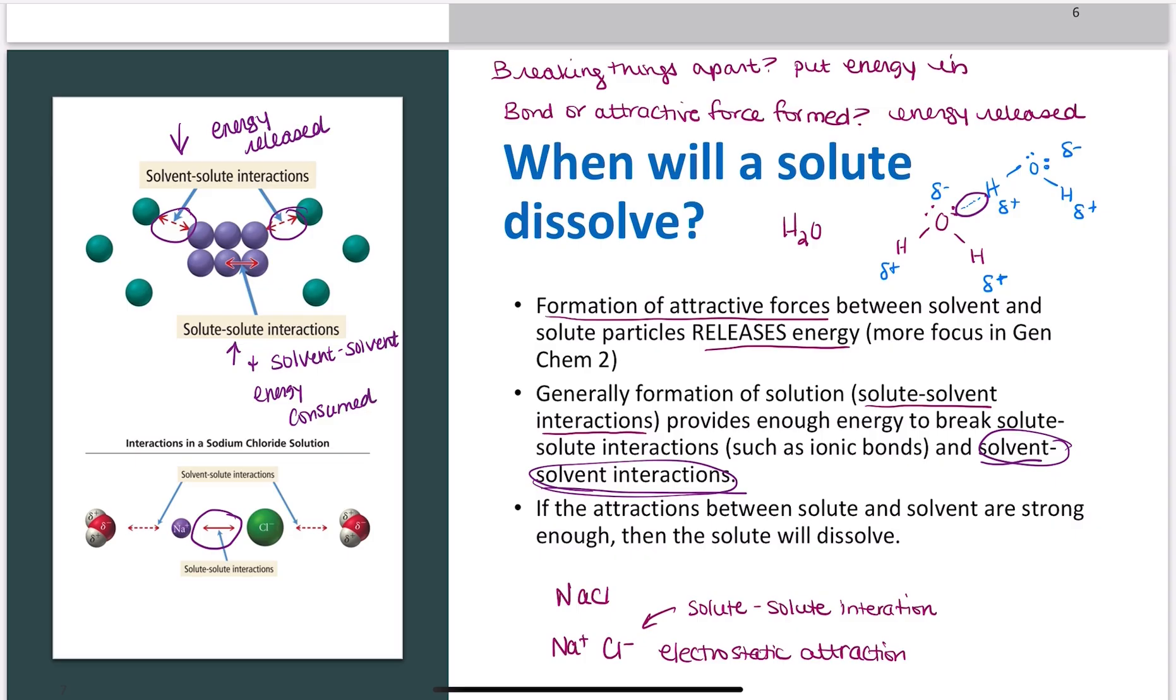Things that are similar in property like to mix together. We'll talk more about this in a future class, but it's called the like-dissolves-like concept. Things that have similar properties will dissolve each other. This is why ionic compounds will split apart into their individual ions in solution.